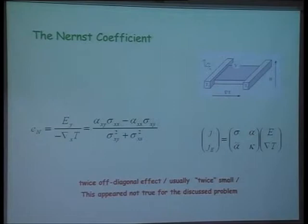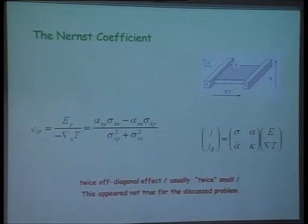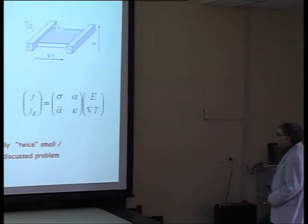There is a reciprocal effect: when there is electric current there is flow of heat in the perpendicular direction. Usually each kind of non-diagonal transformation is accompanied by some smallness, so in that sense it is twice off-diagonal — from thermal to electricity and in addition in the perpendicular direction. One may expect that the effect will be twice small, namely it will be a product of two small factors.